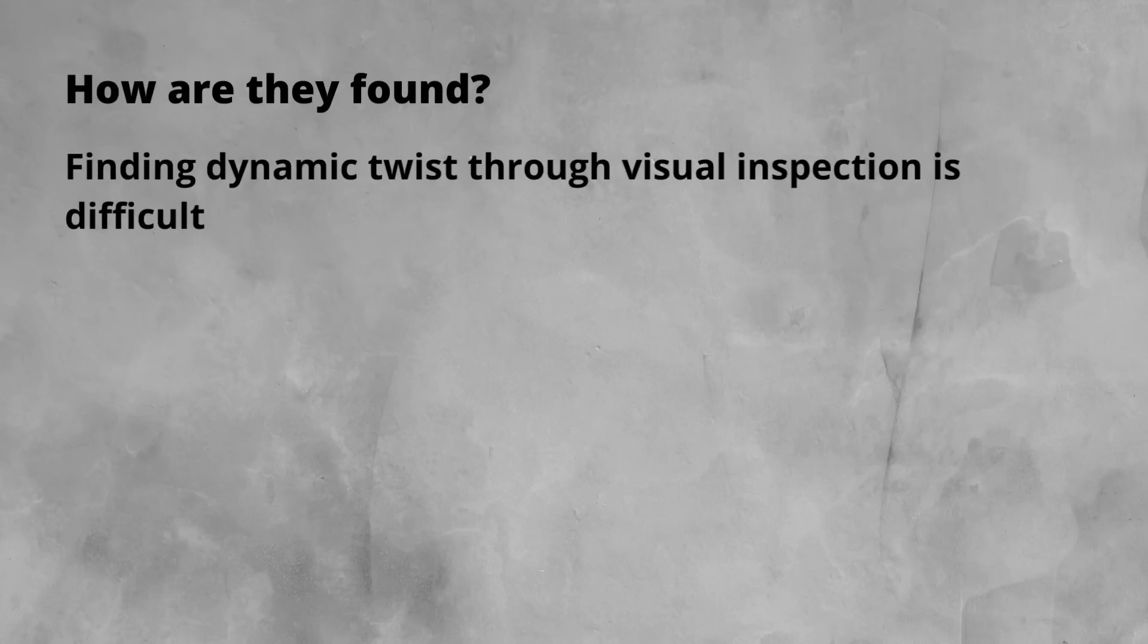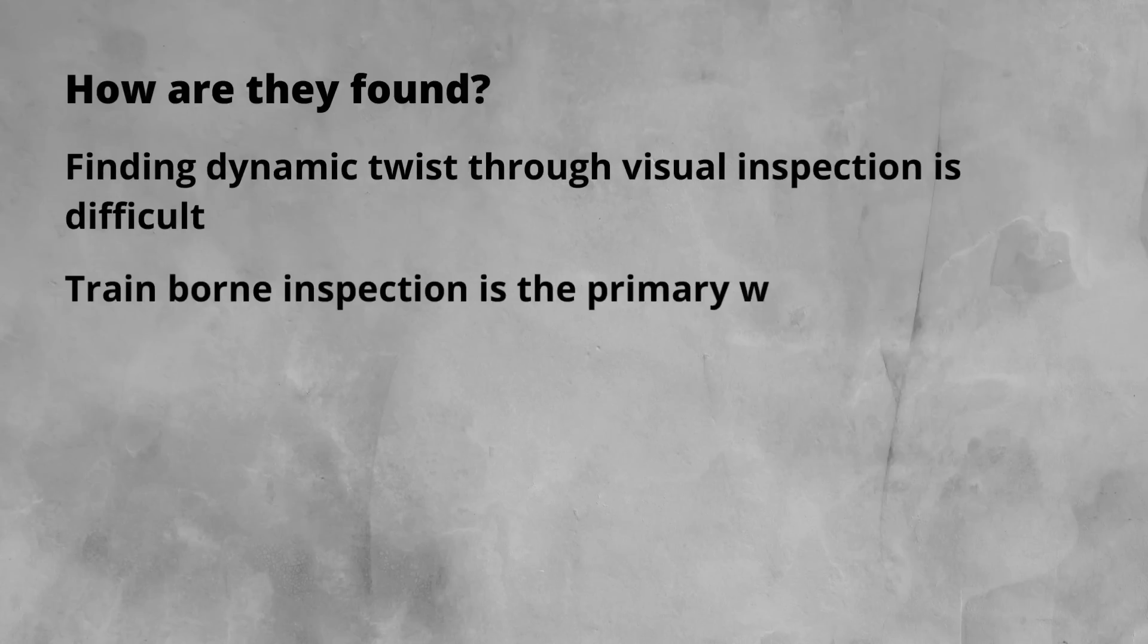Finding twist faults is an important part of maintenance inspection. Given the significant dynamic nature of most twists, finding them through visual inspection alone is very difficult, especially in access with no trains running. Because of this, train-borne inspection is the favoured way to go.